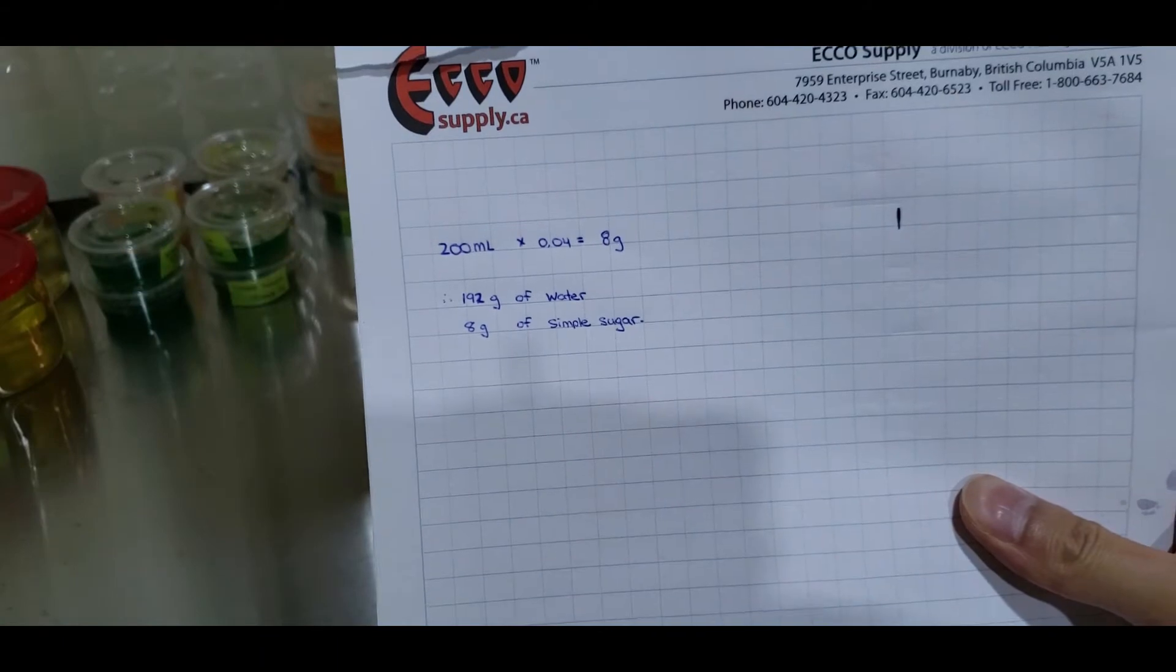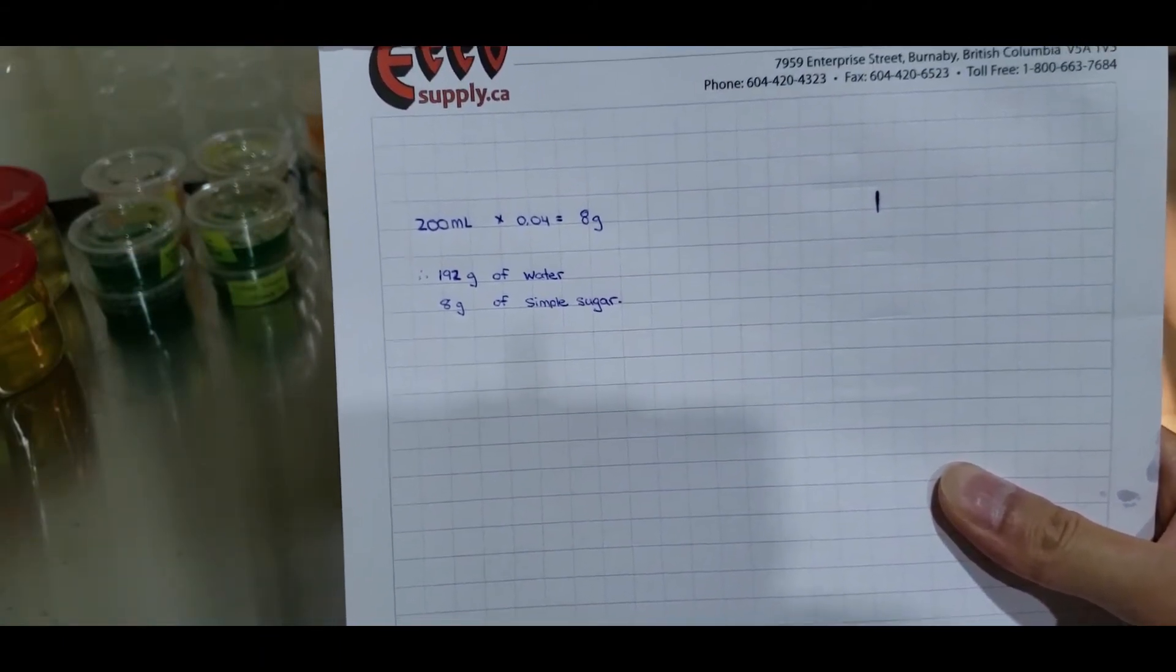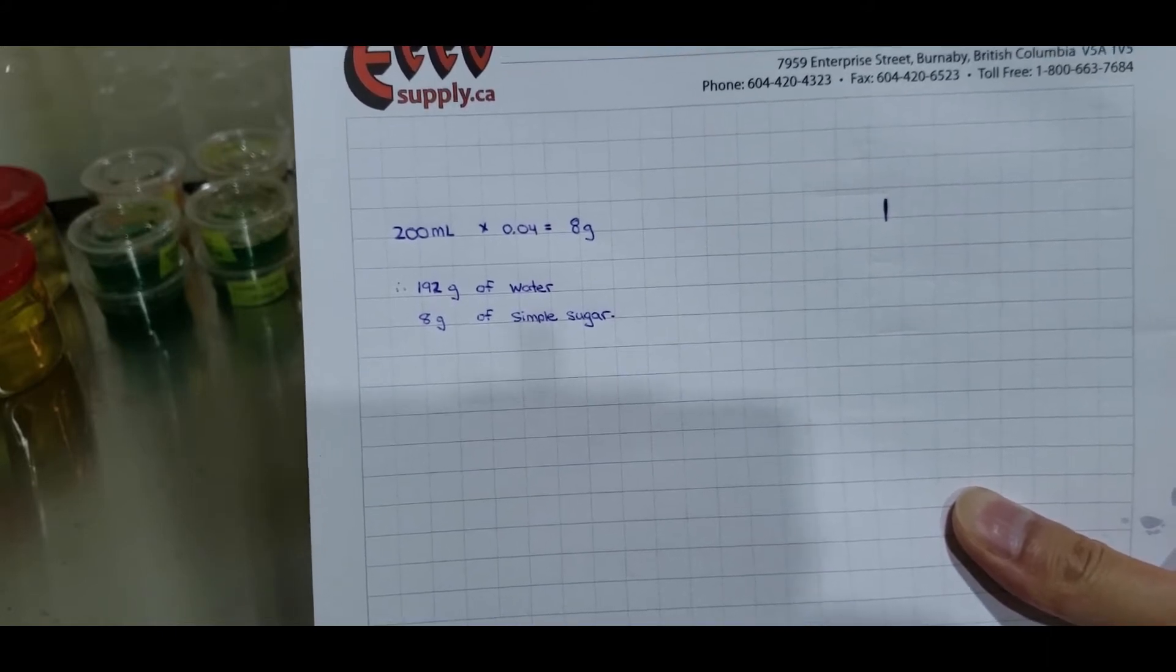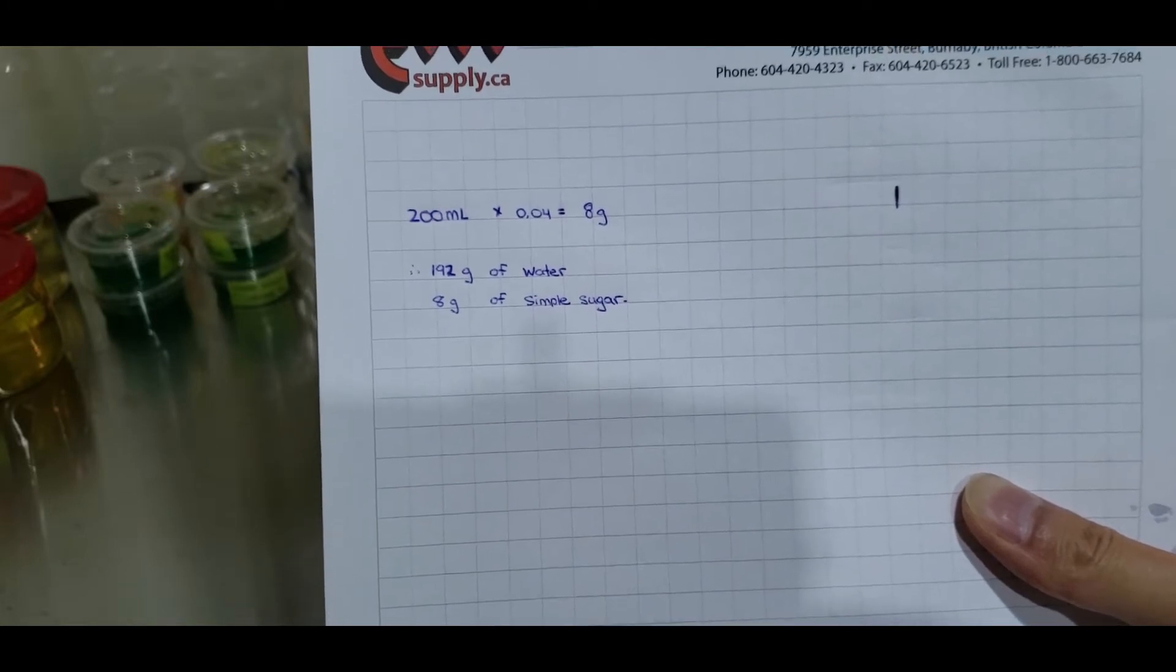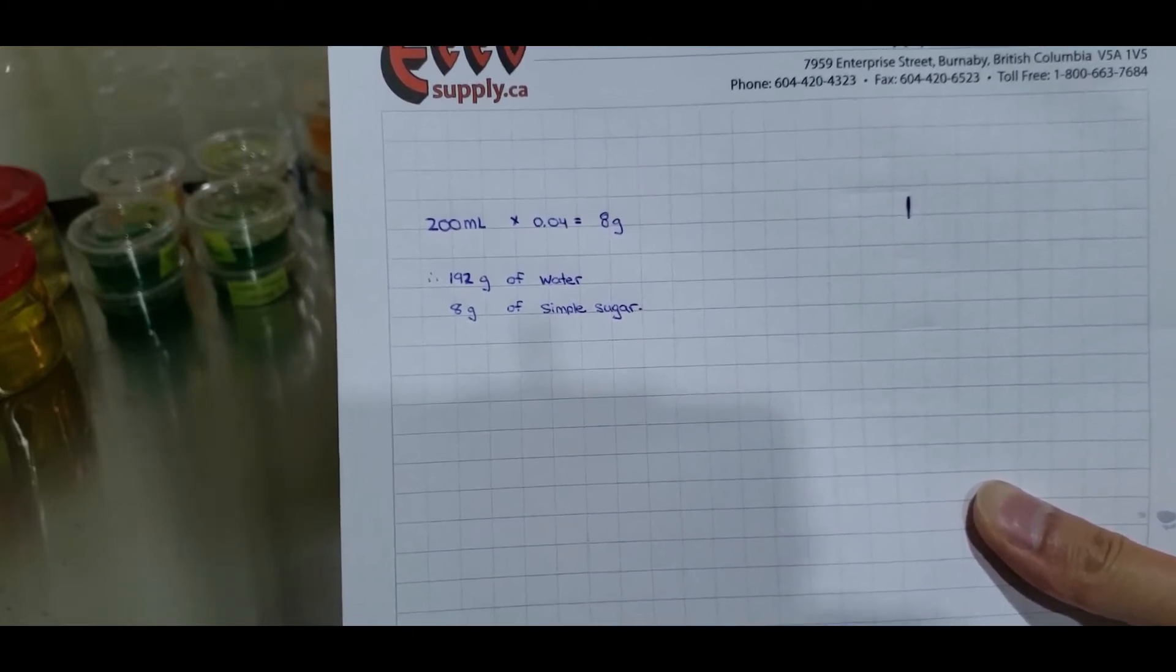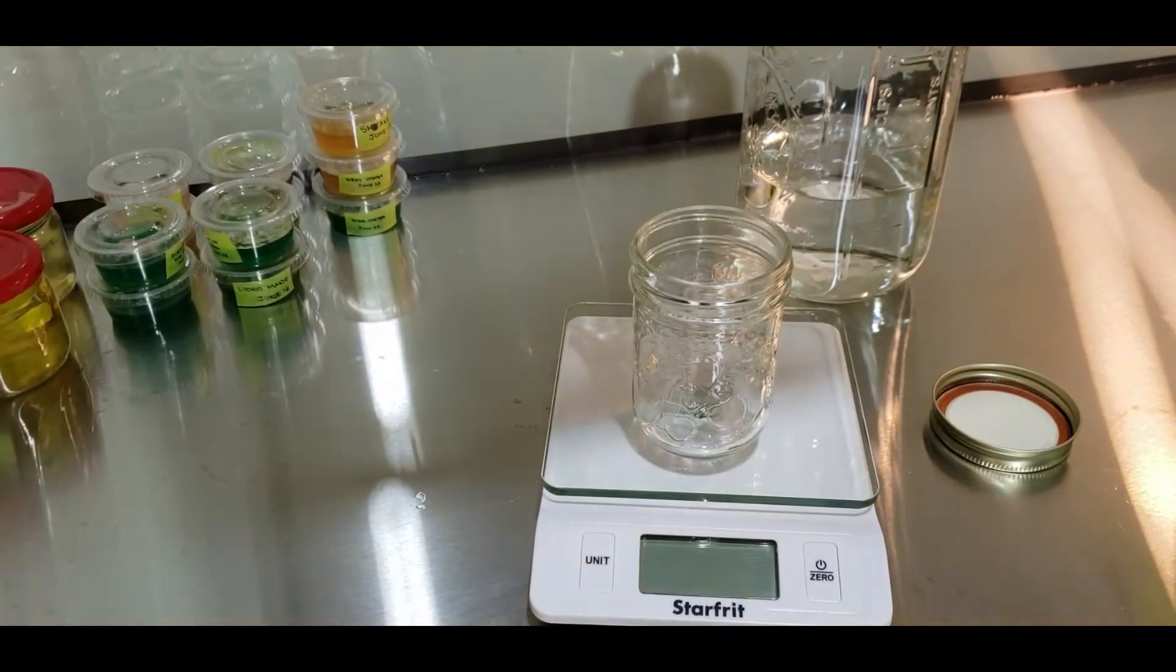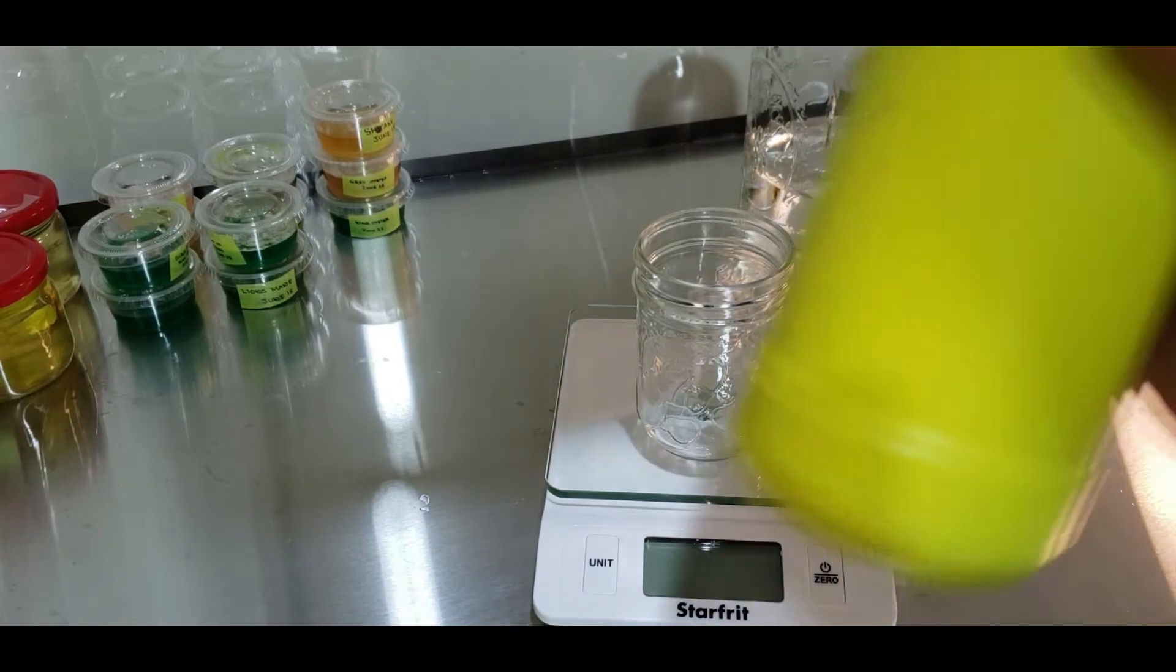So here's our calculation. You have 200 milliliters of water times 0.04 which is 4%, but that's in decimal. So you get 8 grams of sugar. But you also must minus that from the total amount of water, which would be about 200 grams. Like I said, every milliliter equals one gram. So you have 200 grams minus 8. So you have 192 grams of water and 8 grams of simple sugar. That gives you 200 milliliters in total with a 4% weight solution of sugar.